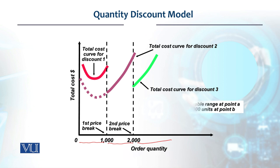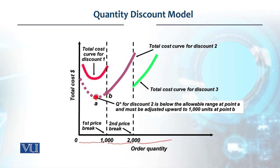You can see that the second discount price curve's EOQ falls in the region of the normal price range, which means it is not feasible. So what you have to do is adjust it to the lowest quantity in that price range — that is 1,000 units. If you order 1,000 units, you will get the price of the second discount.